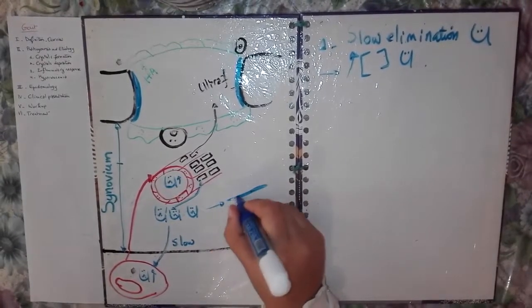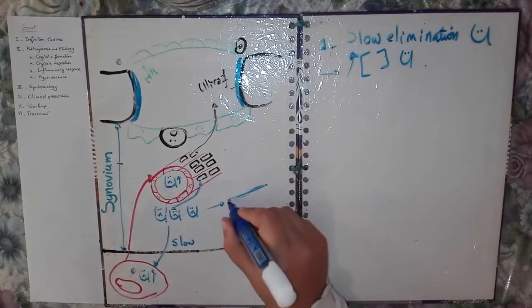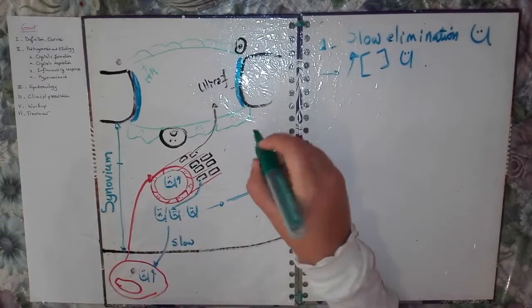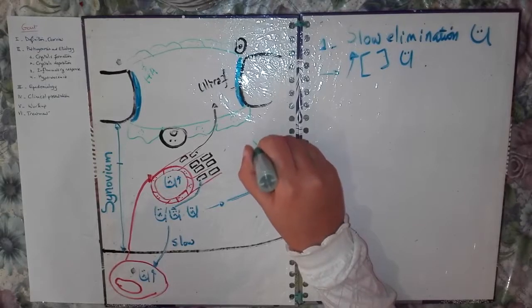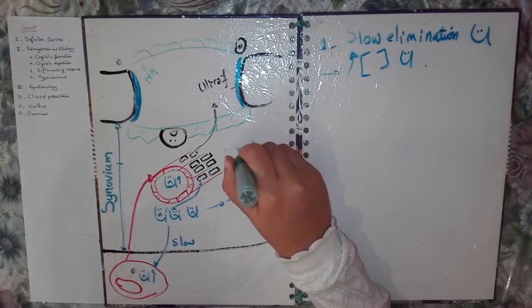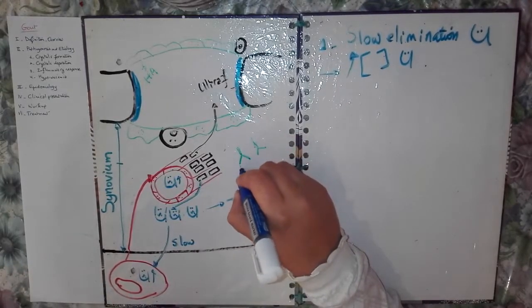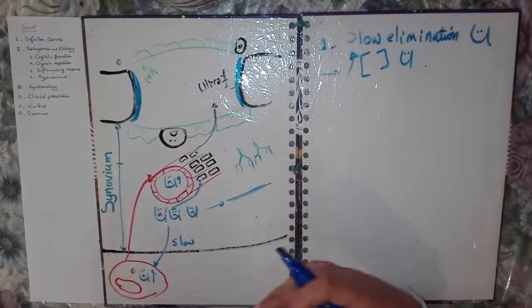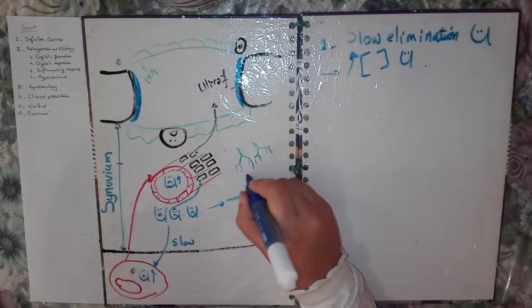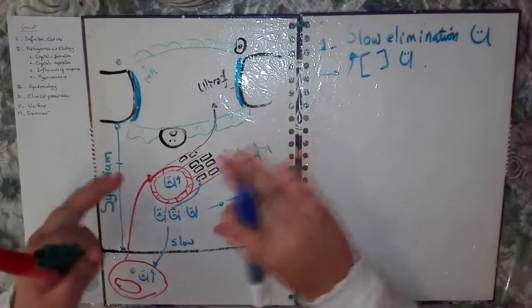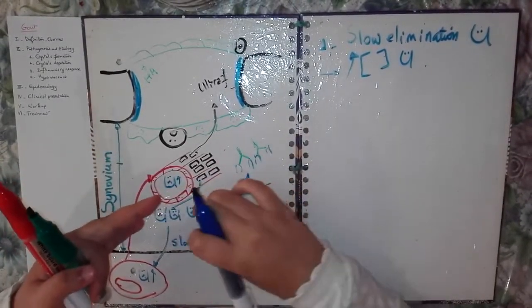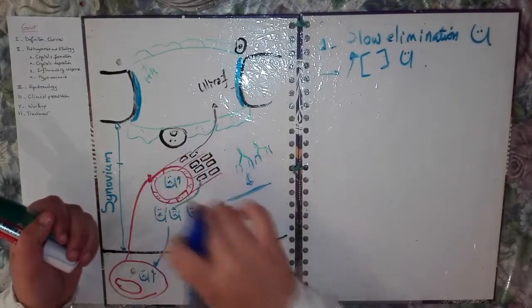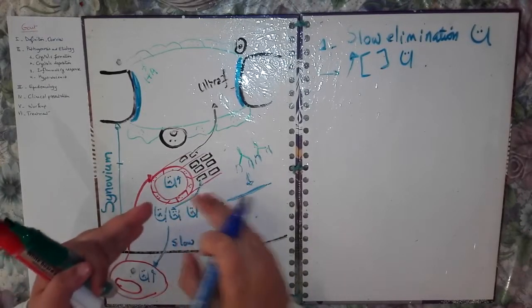There is also another factor incriminated in crystal formation and deposition within the joint. It's about antibodies. Evidence have shown that there are antibodies that bind uric acid molecules and when they bind them they promote the crystallization despite the forces that tend to separate the MSU molecules. So this will promote the crystal formation and crystals can't go out.